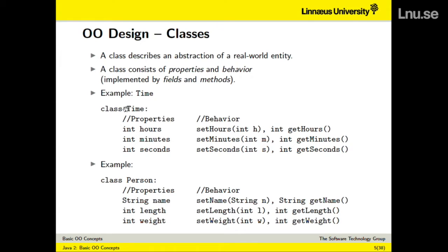For example, a class Time might look like this. We are describing a point in time by hours, minutes, and seconds — these are the data. The behavior is what we can do with a time object: we can ask it for the hours, minutes, and seconds, and we can also update it, changing the seconds from 22 to 45, for instance. So a class comes with two parts — properties and behavior — and in Java we have fields that carry the data and methods that tell us what we can do with an object of this type.